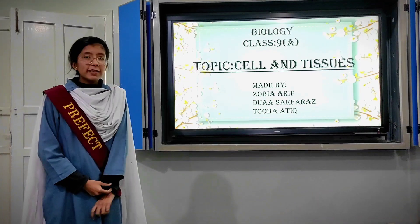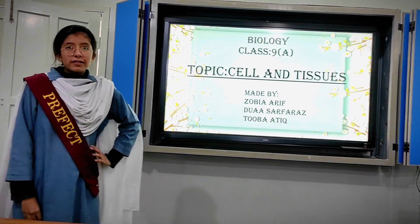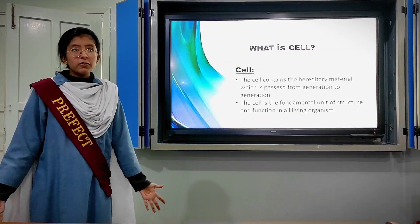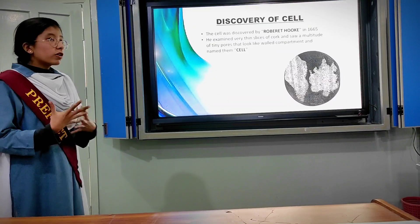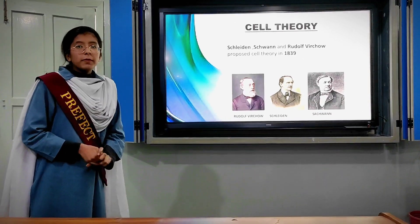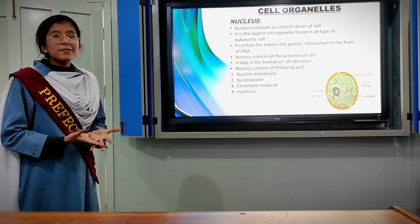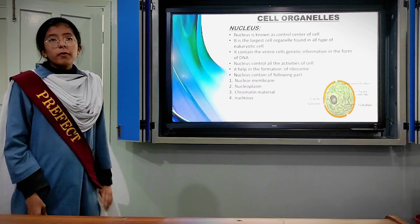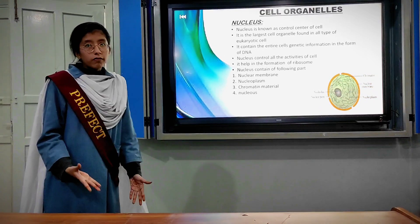Assalamu alaikum, my name is Tuba and I am a student of class 9, presenting the biology topic of cell and energy. A cell is the basic structure and fundamental unit of life. Cells contain hereditary material which is transferred from generation to generation. Robert Hooke was the first person to discover the cell in 1665. Cell organelles: cells are made up of multiple organelles which contain many functions and structures, including ribosomes, lysosomes, polysomes, mitochondria, and many others. The lysosome is known as the cultural center of the cell.